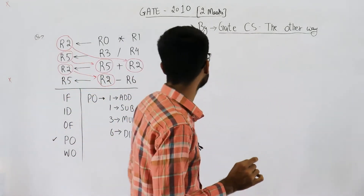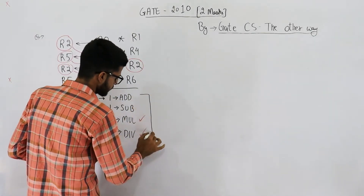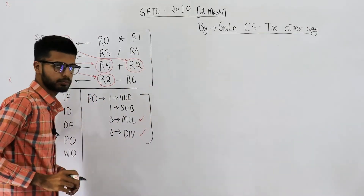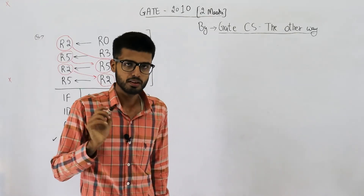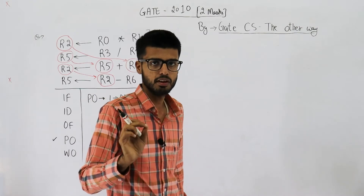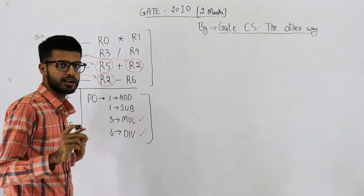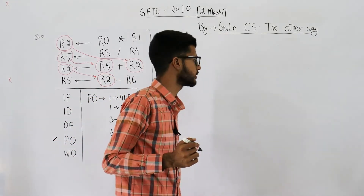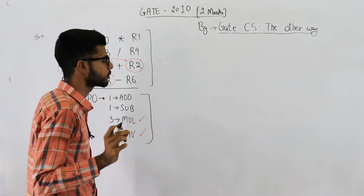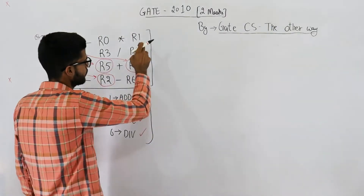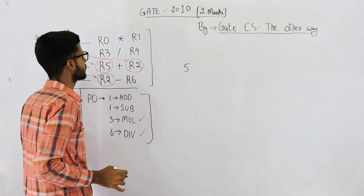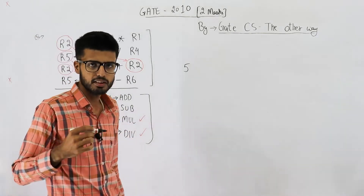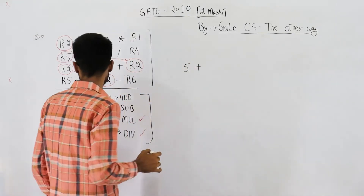The shortcut says: for the time being, neglect the multi-cycle PO stage. Calculate the number of clock cycles required to execute the program considering each and every stage requires only one clock cycle. Dependencies can be neglected since full forwarding is used. The first instruction will take five clock cycles because it's a five-stage pipeline and the pipeline starts empty, so the first instruction passes through all five stages.